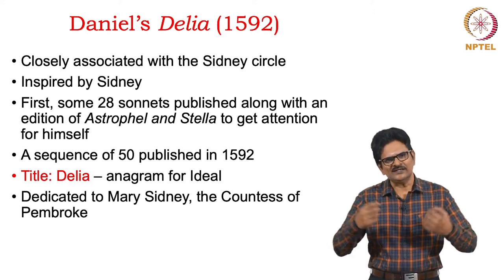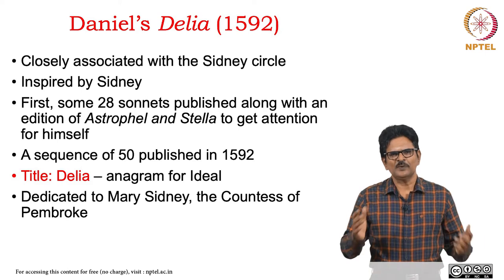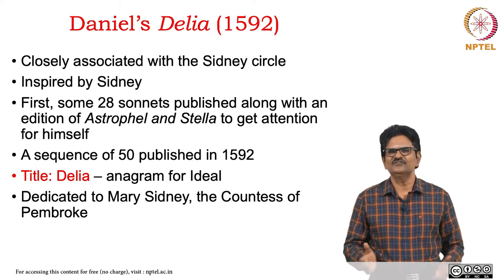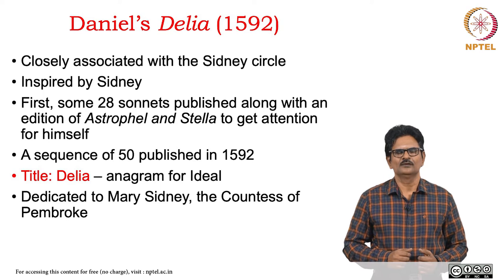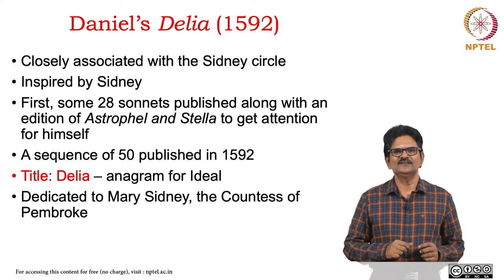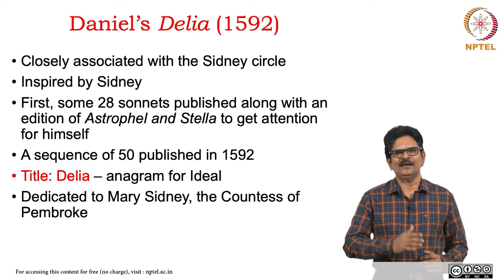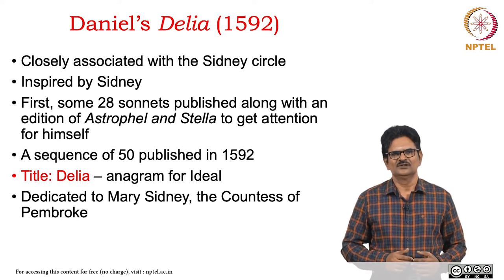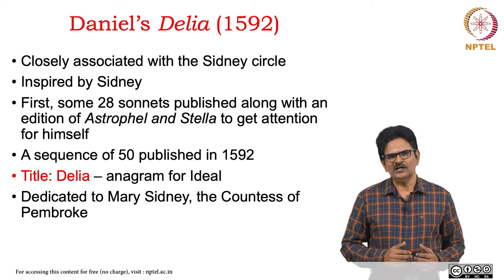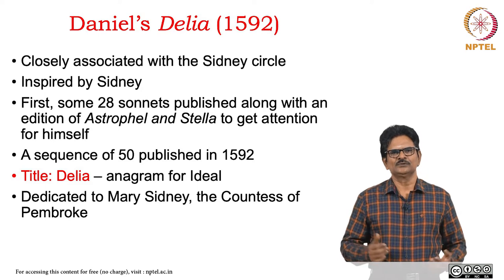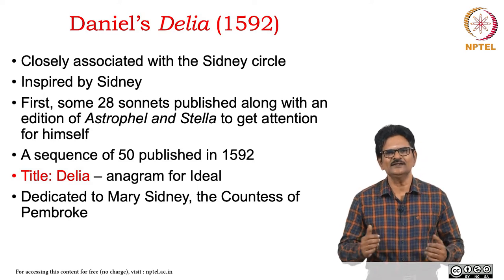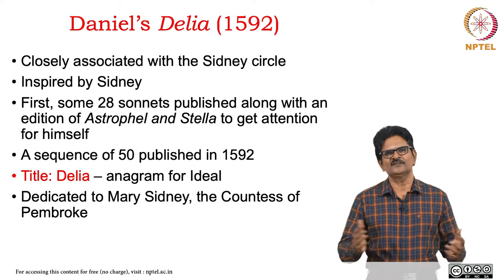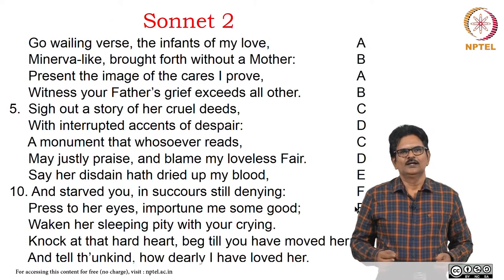More to get attention to himself, when it was published, Delia had 50 sonnets. If you look at the title, we will see that Delia is an anagram for 'ideal.' This particular volume he dedicated to his patron Mary Sidney, the Countess of Pembroke, a sister of Sidney. Now let's read Sonnet 2.